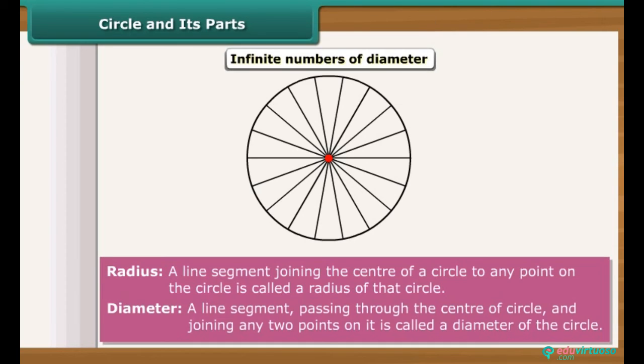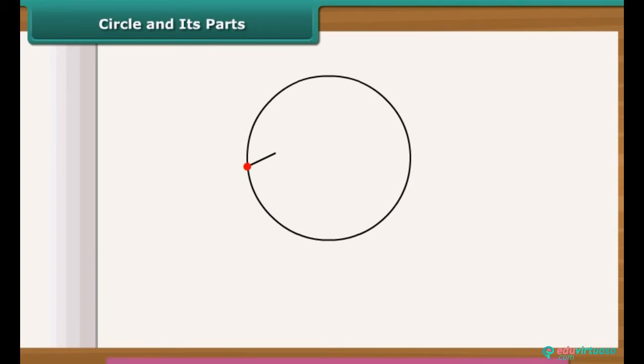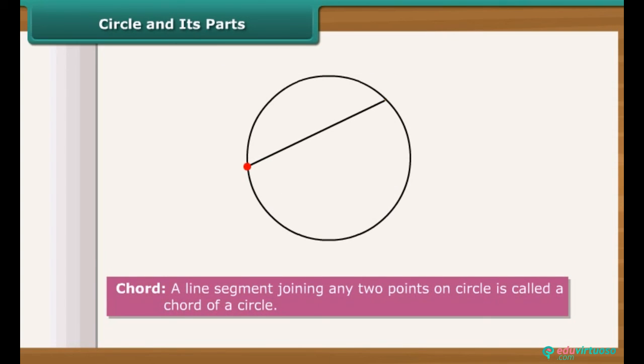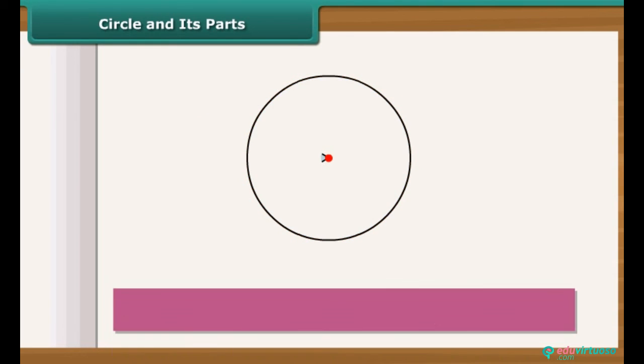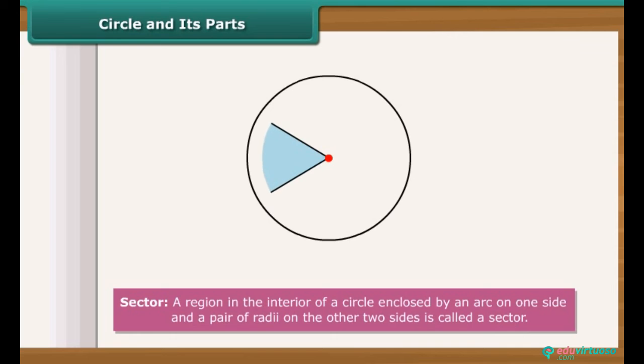The line connecting two points on circle is called a chord. Like any other closed figure, a circle has interior and exterior region. The region inside a circle can be bounded by two radii and arc of circle. The region is called sector of the circle.